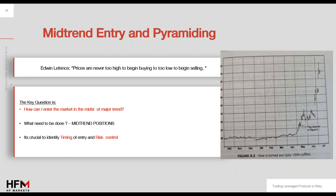In the next two months — from mid-May up to mid-July — the remaining four-fifths of the price rise was achieved. The key question now is: how does one enter the market in the midst of a major trend?